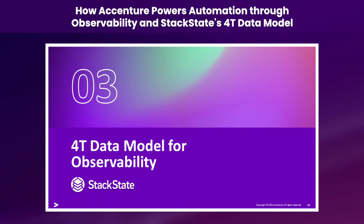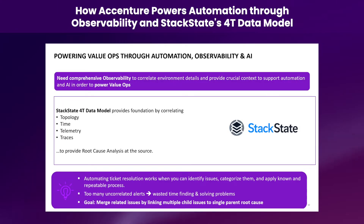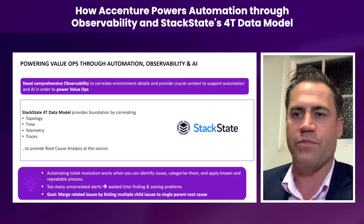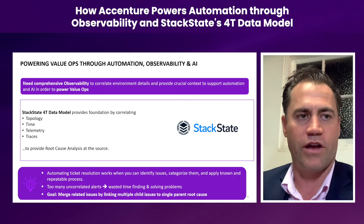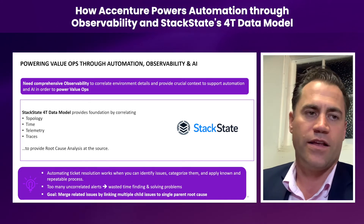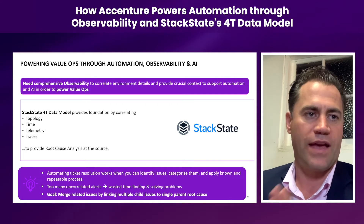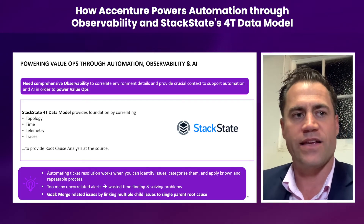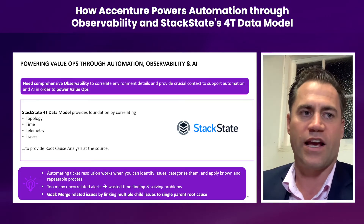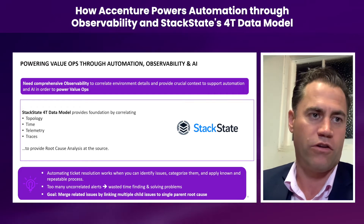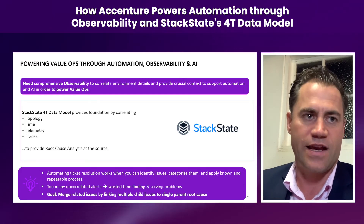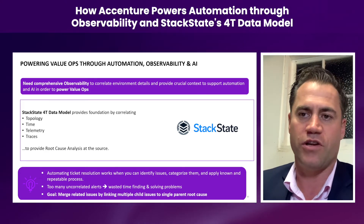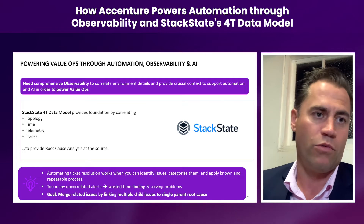Let me introduce the 4T data model that we really rely on with StackState. The 4Ts represent four key dimensions that I think are game-changing to have together. The first is topology — how we bind and create that master topology. The second is the awareness of time and the capture of topology state at every slice of time. This gives us the ability to go back in time so that, in these changing environments, we can go back to the point in time when changes occurred within the topology and understand the exact state — which is extremely important for troubleshooting and automation.